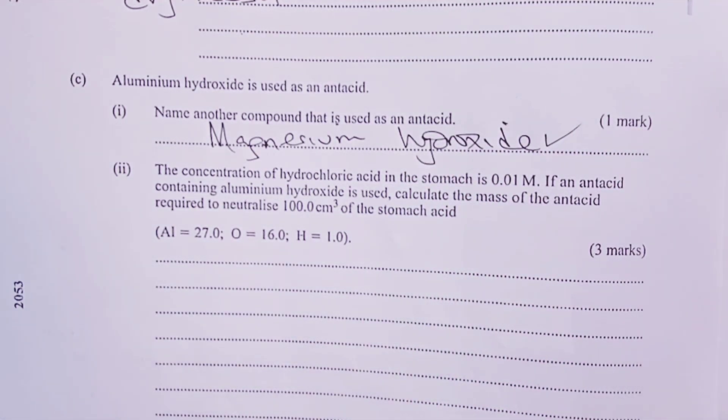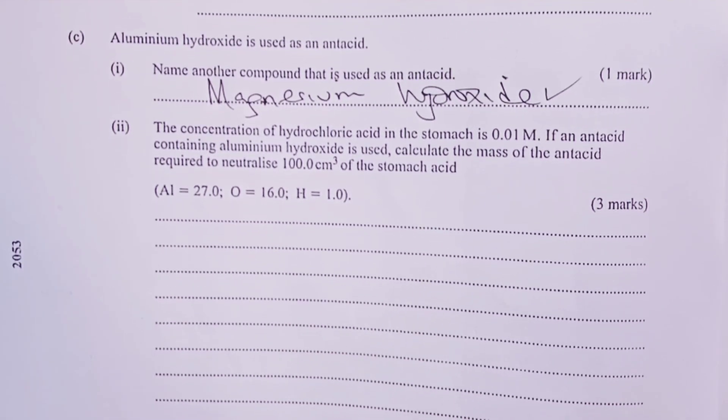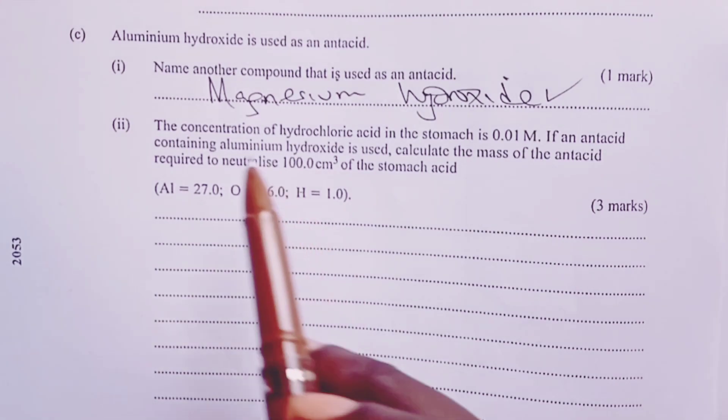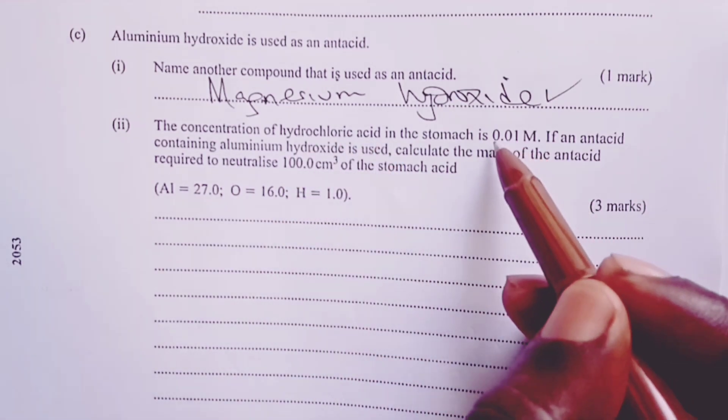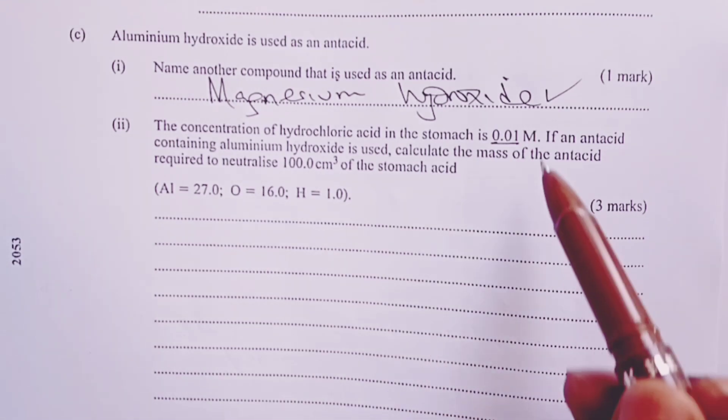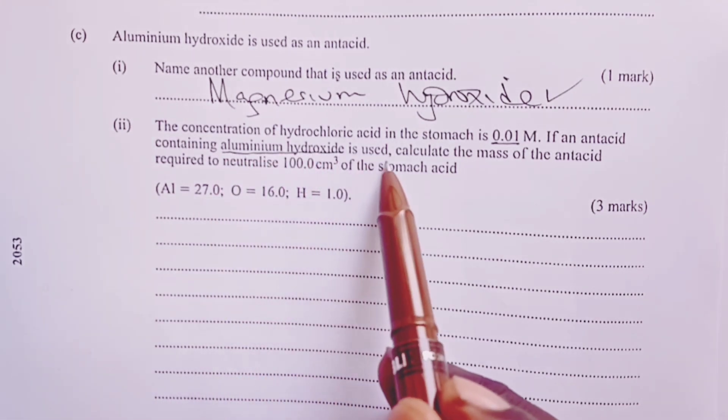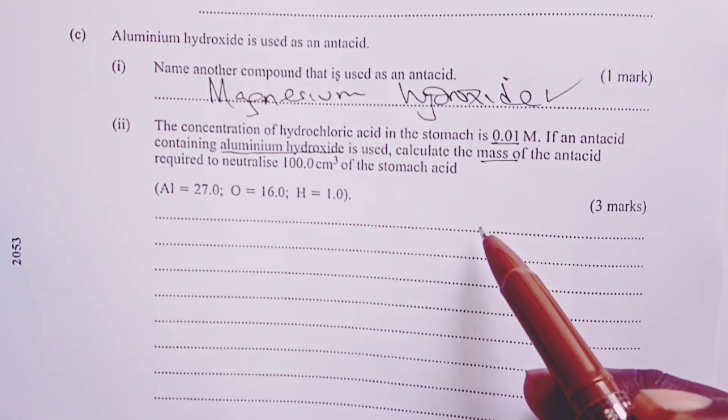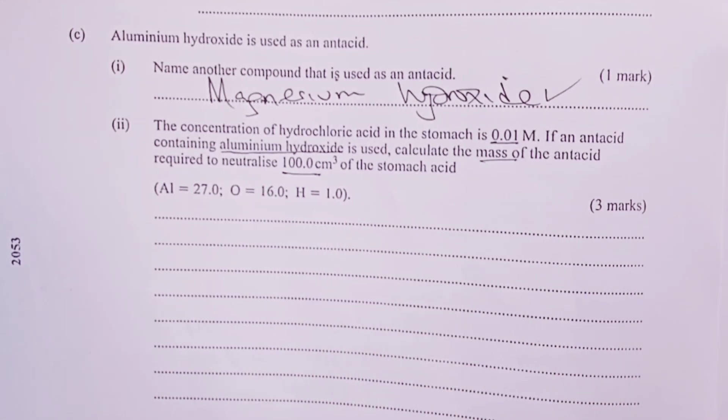One mark. Then question 7 ended with some calculation here from the topic mole. So we are told, the concentration of hydrochloric acid in the stomach is 0.01 M. If an antacid containing aluminium hydroxide is used,